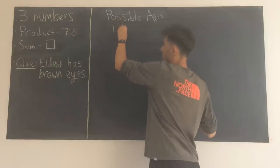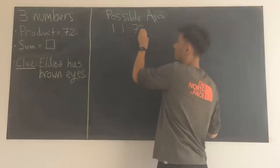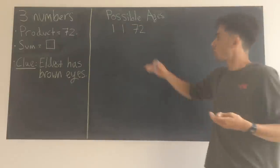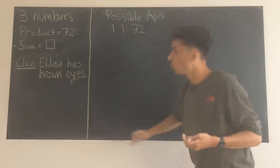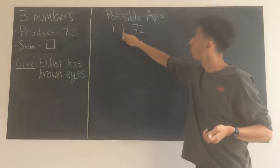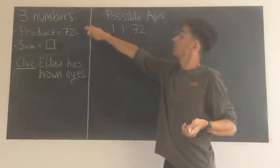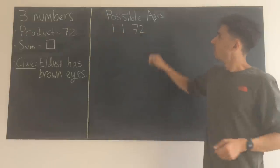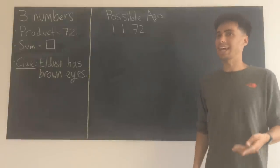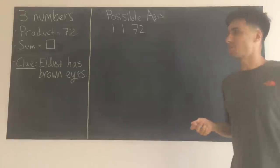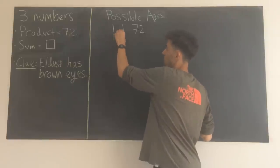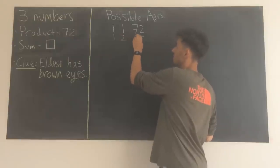The key with this kind of question is trying to work in some kind of logical order. So I'm going to try and work in numerical order going downwards, starting with a really obvious combination 1, 1 and 72. They definitely multiply to give 72. It's a very unlikely combination of three ages for some sisters, but we don't mind about that. We're just working mathematically here. So next I'm going to try 1, 2 and 36.